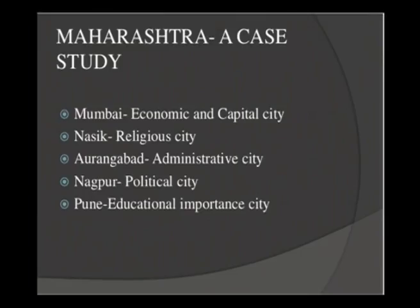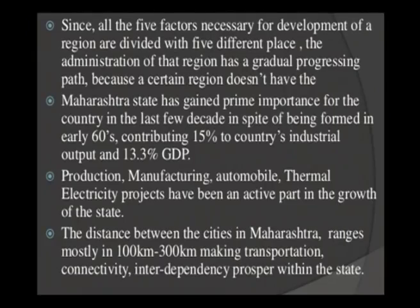We will start with the case study of Maharashtra based on the theories proposed by Geddes. The constellation theory was applied to Mumbai, Nasik, Aurangabad, Nagpur and Pune. Mumbai is the economic and capital city. Nasik is considered the religious city. Aurangabad is a completely administrative city. Nagpur is a political city. And Pune is the educationally important city. Since all five factors necessary for development of a region are divided among five different places, the administration of that region has a gradual progressing path.